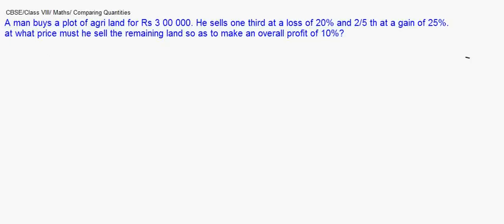So the cost price of the entire land is 3 lakhs. First, let us see how much final profit it would need to make. It wants to make a 10% overall profit. So profit of 10% will be 10% of 3 lakhs, that becomes 30,000. We need to make 30,000. Let's see how far he has gained or lost in the first two transactions.